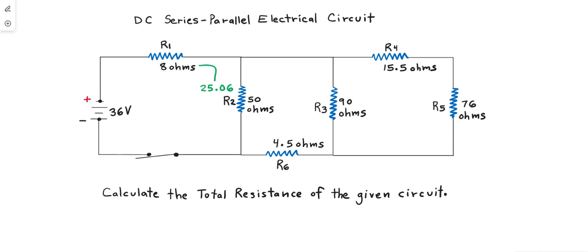Then all that's left is to add the R1 series resistor. Upon doing so, we compute 33.06 ohms total resistance as the correct answer to this problem.